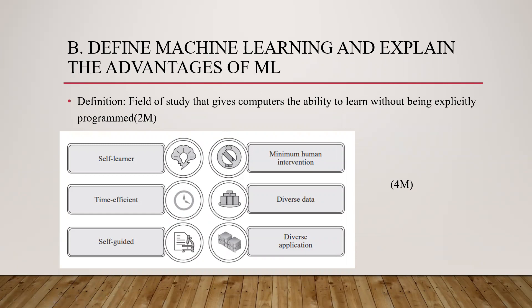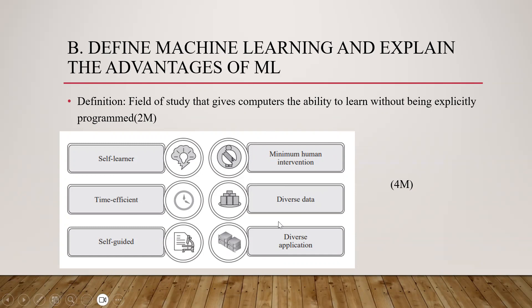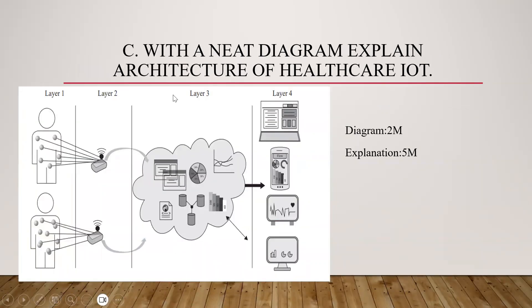For define machine learning and explain the advantages of machine learning (6 marks), start by writing the definition — two important lines are provided here. You can also mention how machine learning is ruling the world and list the different types of machine learning without explaining them in detail. That covers two marks. The remaining four marks are for advantages: self-learner, time efficient, self-guided, diverse application, diverse data, and minimum human intervention. You must list and then precisely explain each advantage.